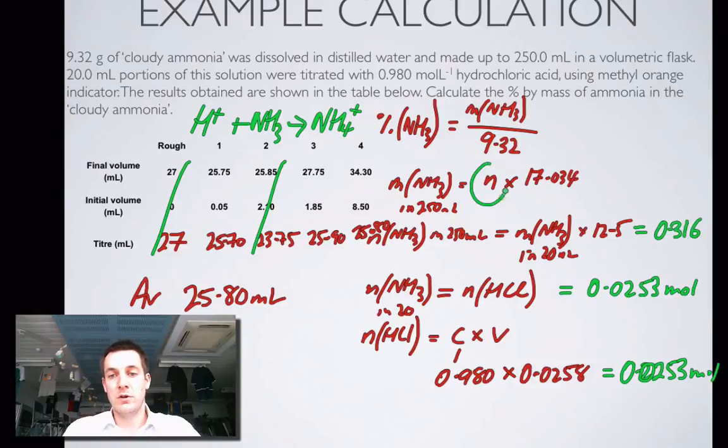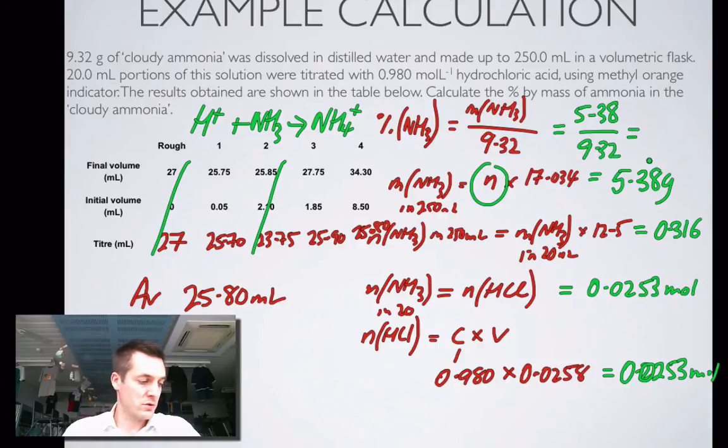And now I know this number of moles here. Multiply it by 17.034, and that equals 5.38 grams. So my percentage of ammonia is 5.38 over 9.32, and that equals 57.8%. So that's how we do the calculation.